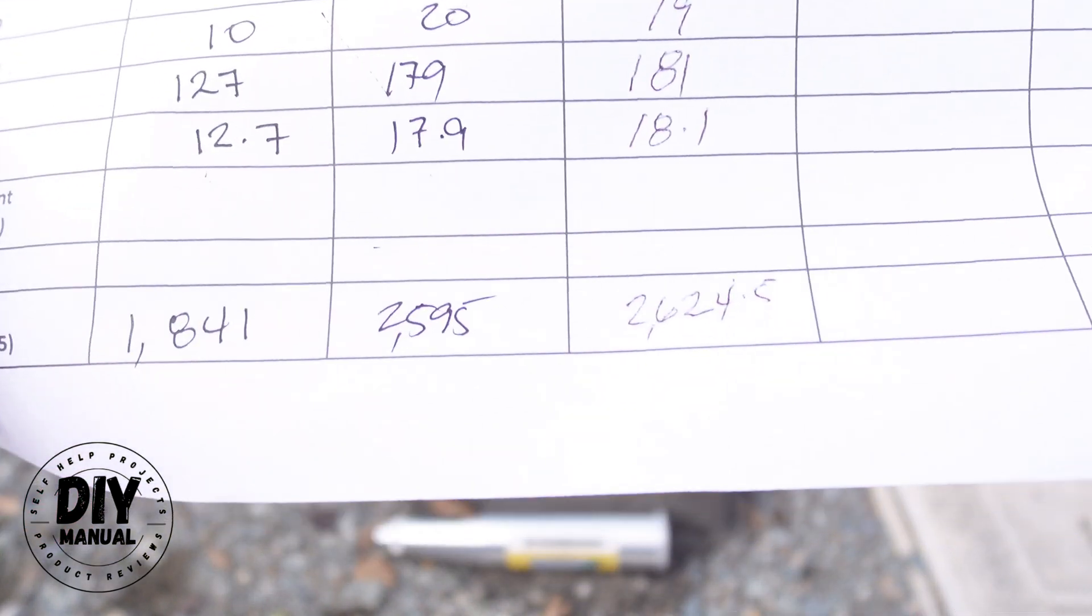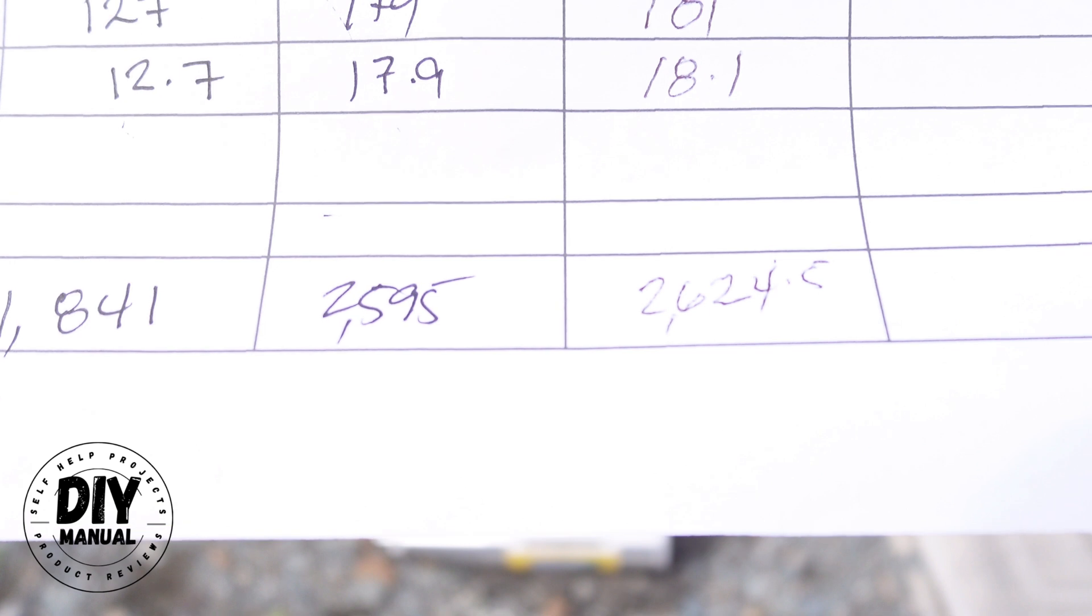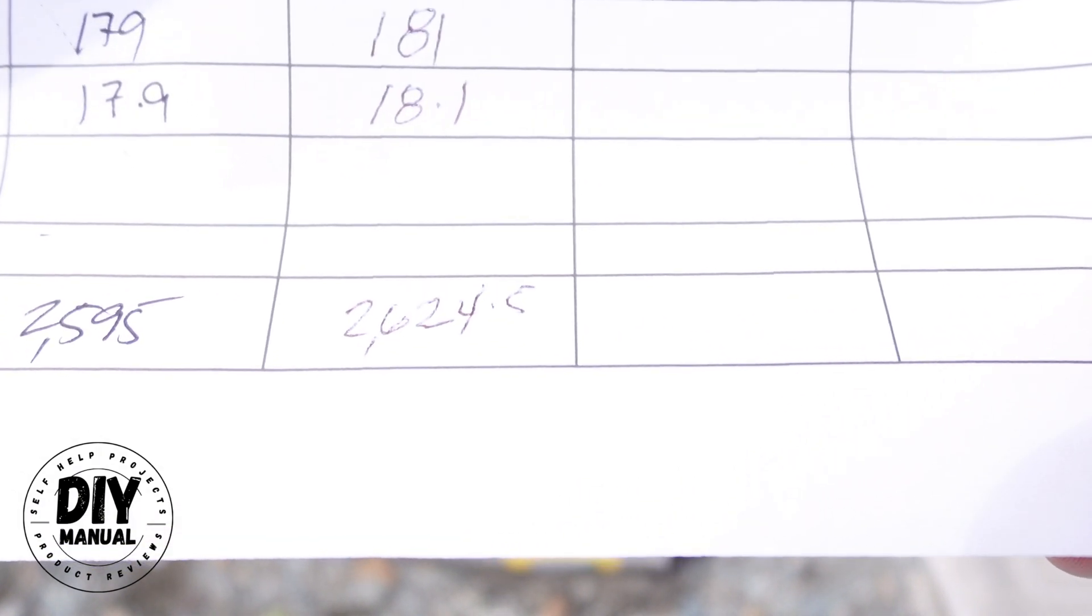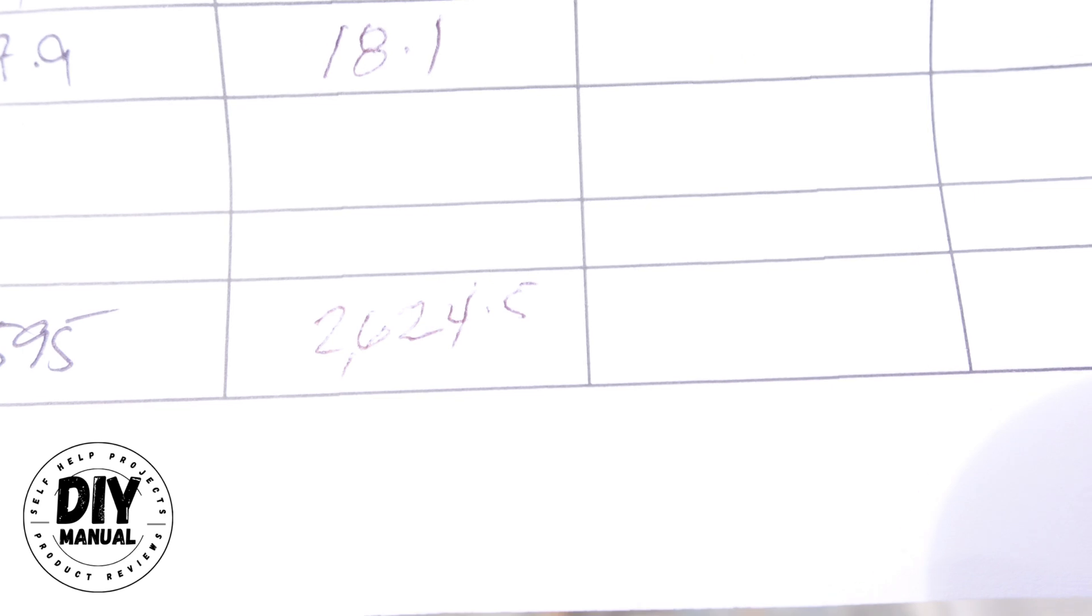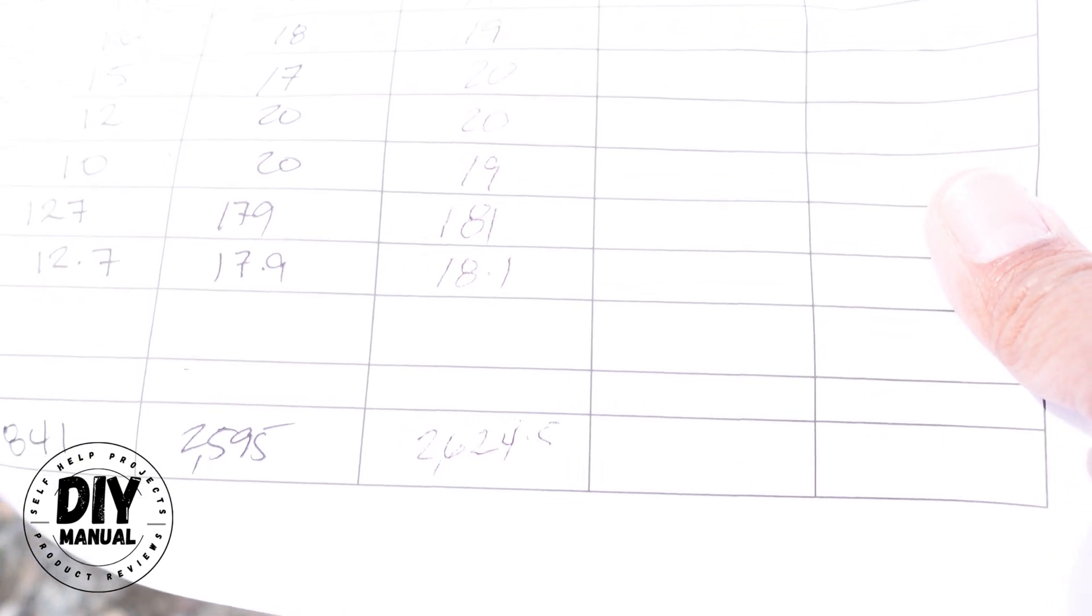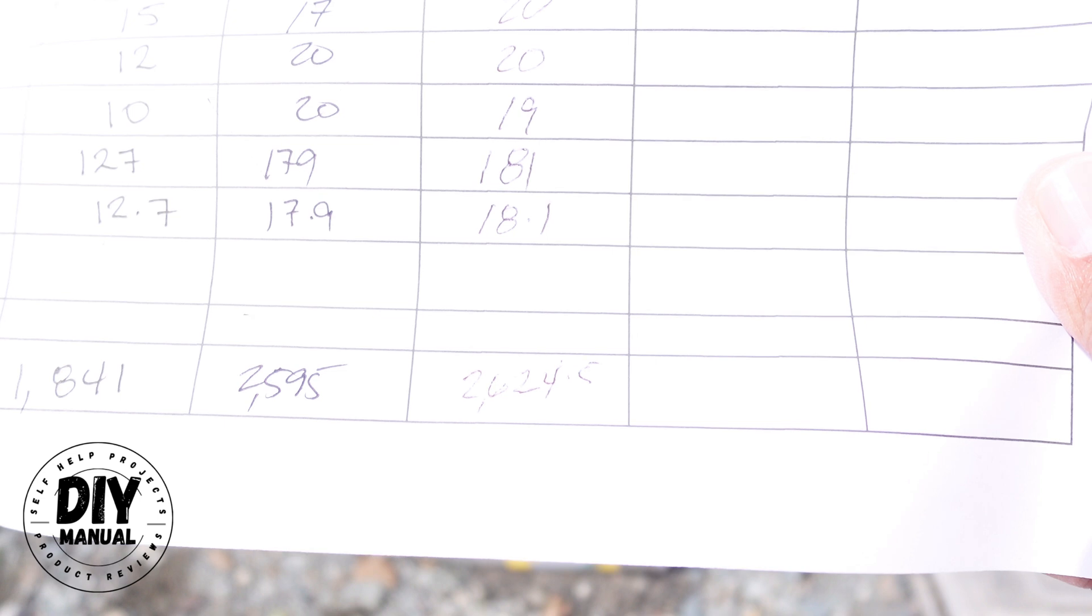So for the dry pour concrete, on day 7, we got 1,841. Day 14, we got 2,595. And day 21, we got 2,642.5. So it's not bad. For a dry pour concrete, almost 3,000 PSI.